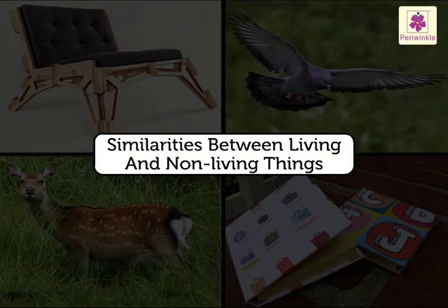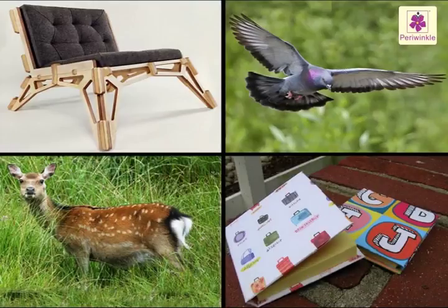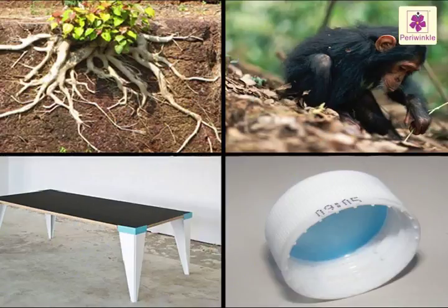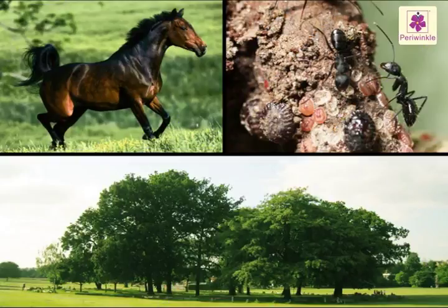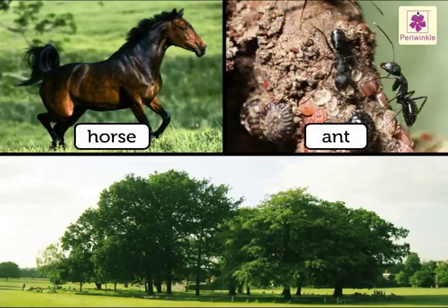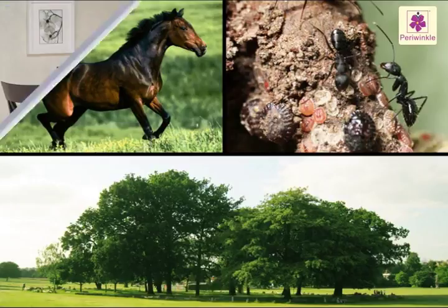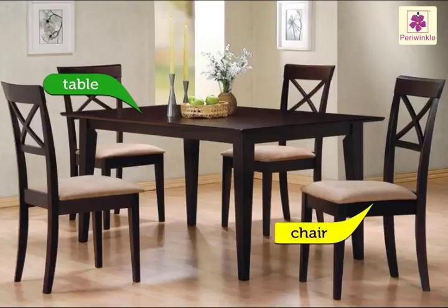Similarities between living and non-living things. Both living and non-living things have a particular shape. The horse, the ant, and the tree have a particular shape, and so have the table and the chair.